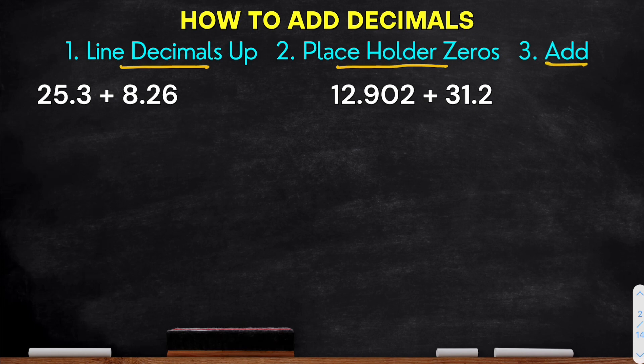Okay, so for our first example, we have 25.3 plus 8.26. So using the first step guys, line decimals up. So we have 25.3 plus 8.26. So in lining up decimals, make sure that the decimal points are aligned.